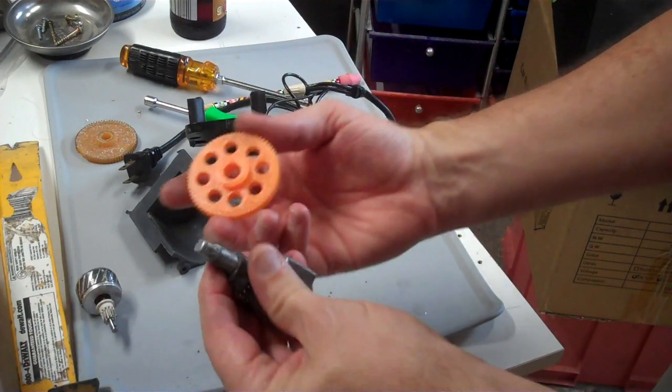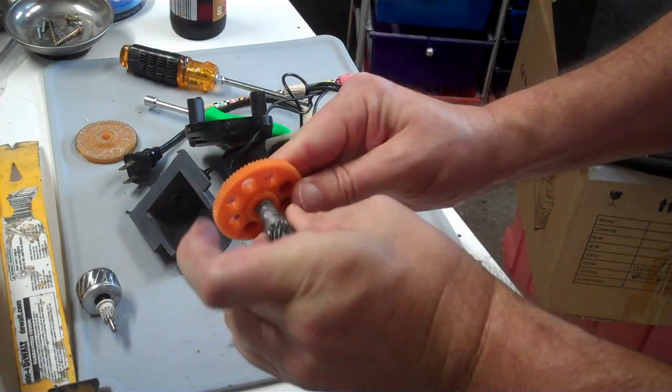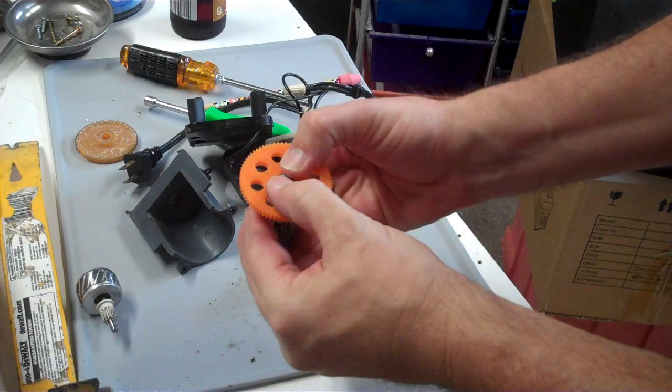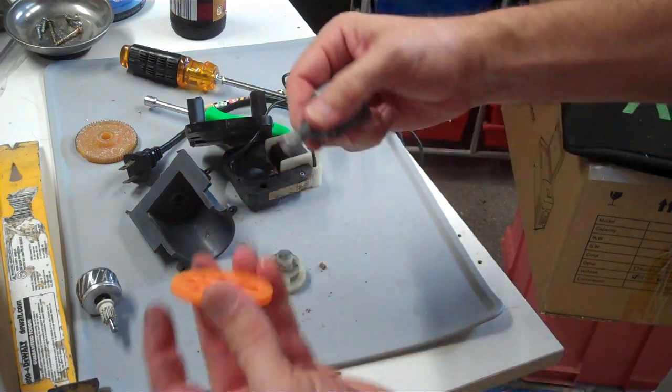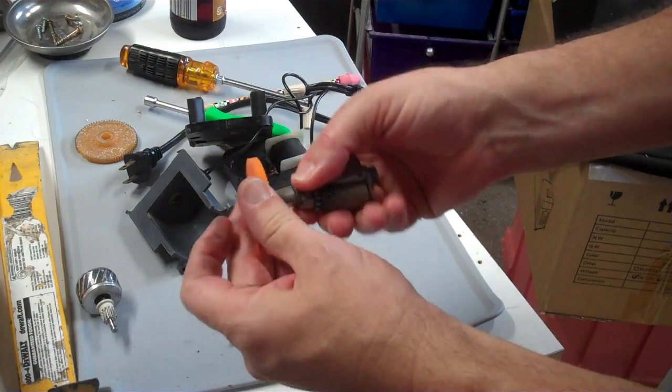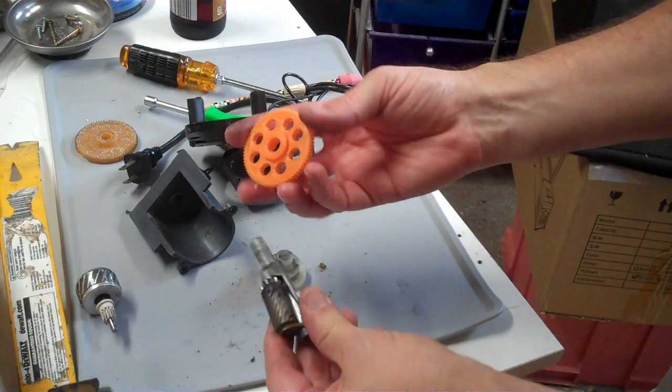Now, because I 3D printed it, it might be a little tight here. And so I'm going to test the fit. Actually, that fit might be a little bit loose, really. It looks like it'll be no problem getting that on. And then it just kind of friction fits there. So I think that's going to go on really nicely.